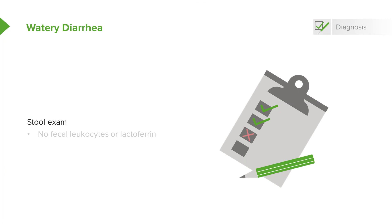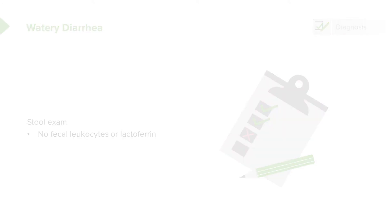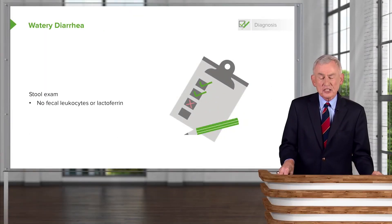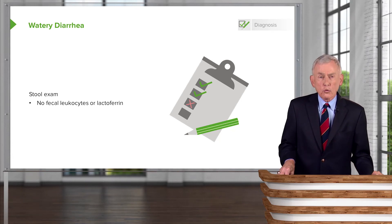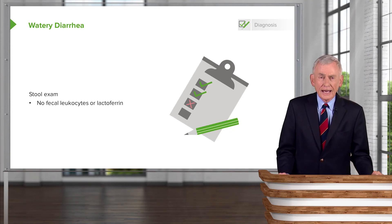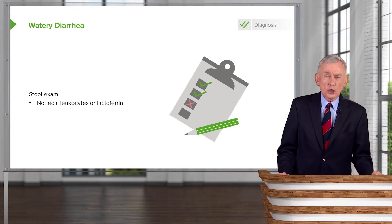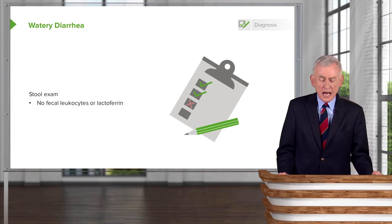When would you need to do a stool exam? Obviously in those patients who have a severe form. What you're looking for in the stool in patients with watery diarrhea is making sure there are no white cells in the stool, or that lactoferrin — a test for evidence of white cells — is absent. Most forms of watery diarrhea do not have white cells in the stool. If they did, you would start looking for a more invasive type of pathogen.